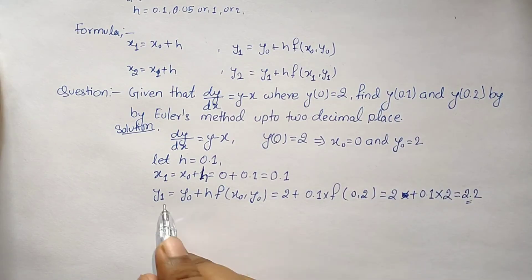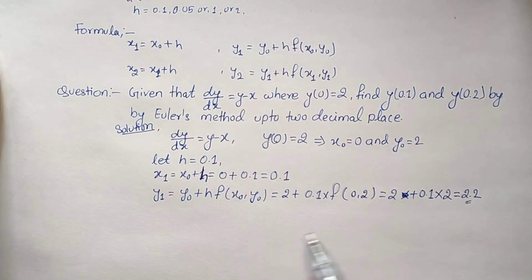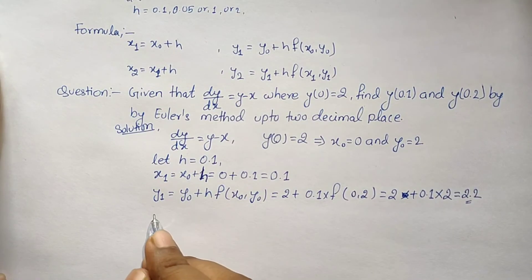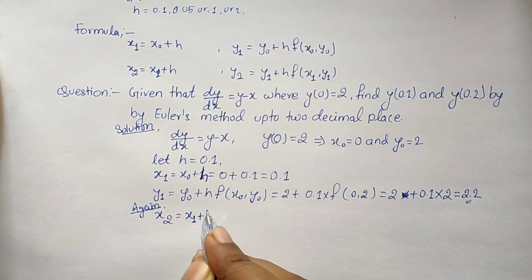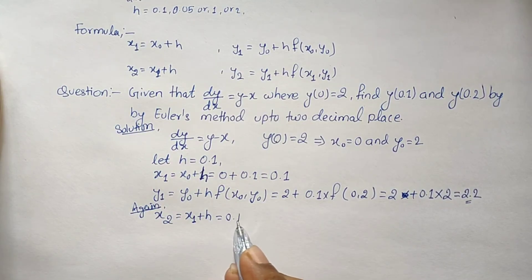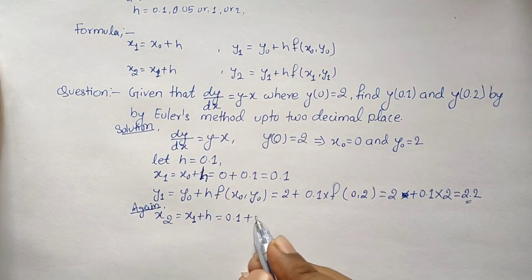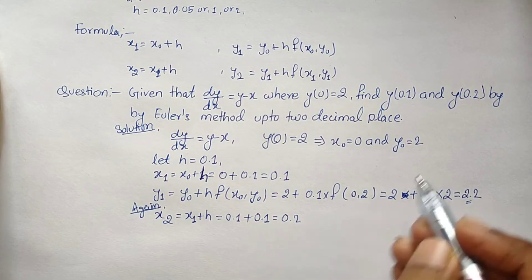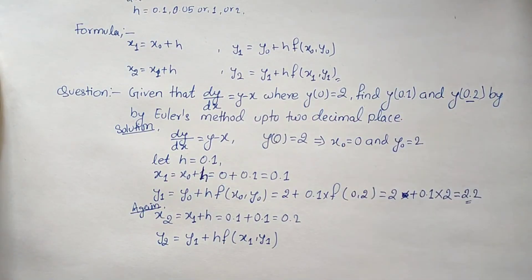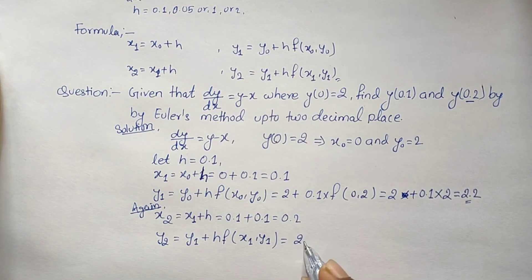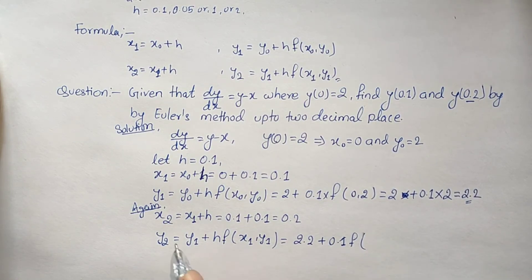Now we need to calculate y(0.2). Using the formula: x₂ equals x₁ plus h, so x₂ equals 0.1 plus 0.1, which gives x₂ equals 0.2. For y₂, use the formula: y₂ equals y₁ plus h·f(x₁, y₁), which is 2.2 plus 0.1 times f(0.1, 2.2).